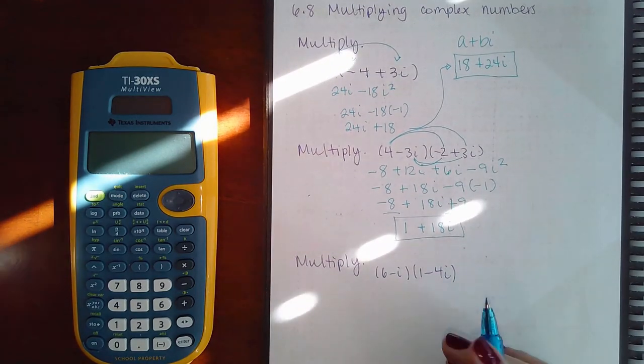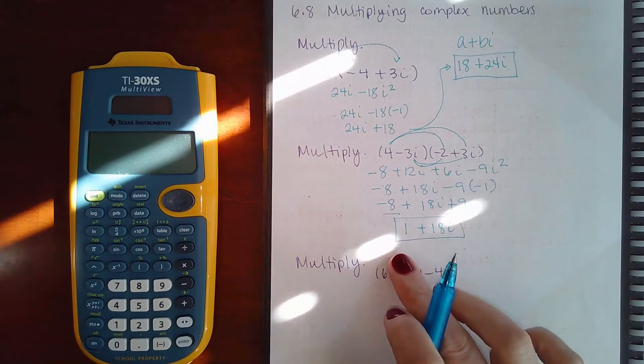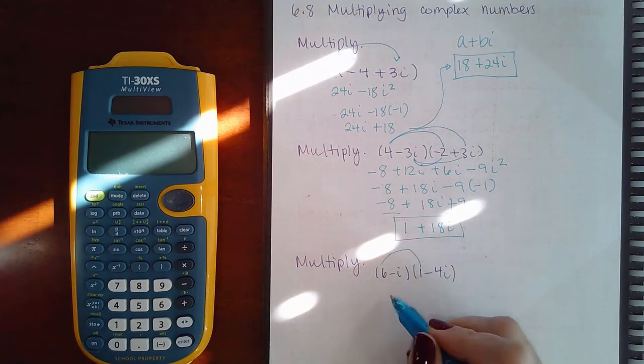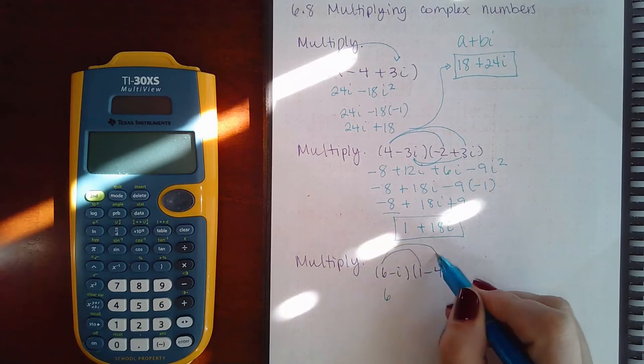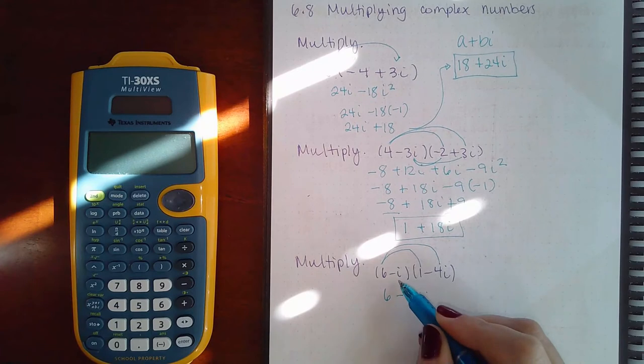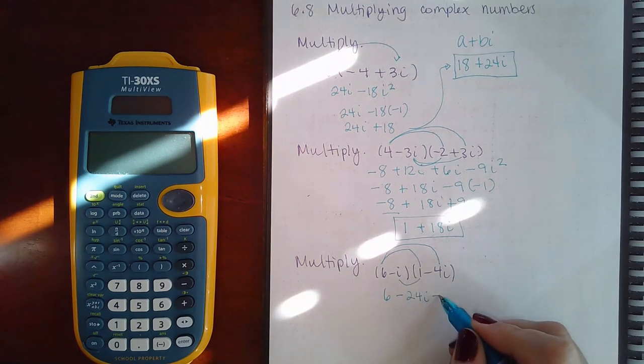So for the next one it's the same thing. You've got a binomial times a binomial, so you need to FOIL. 6 times 1 is 6. 6 times negative 4i is negative 24i. Negative i times 1 is negative i.